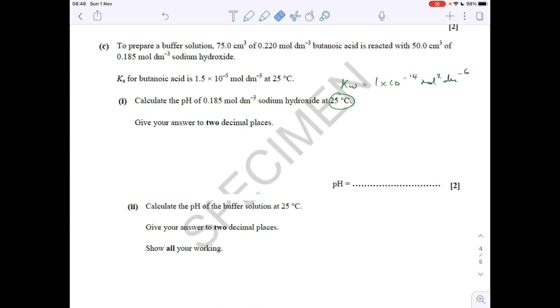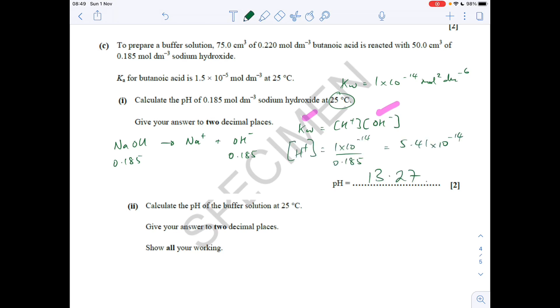Moving on to part C. First thing I'm going to do is calculate the pH of the 0.185 moles per decimeter cubed sodium hydroxide at 25 degrees C. So Kw is 1 times 10 to the minus 14. If we think about the dissociation of that sodium hydroxide, remember it's a strong alkali, strong base, so it's fully dissociated into its ions. So if that's 0.185, so is the OH- ion concentration. If you think about Kw equals the H+ concentration times the OH- concentration, and we know that and we now know that, so if we just rearrange to get the H+ concentration and minus log for the pH. So H+ concentration: 1 times 10 to the minus 14 over 0.185. Minus log gives us 13.27.